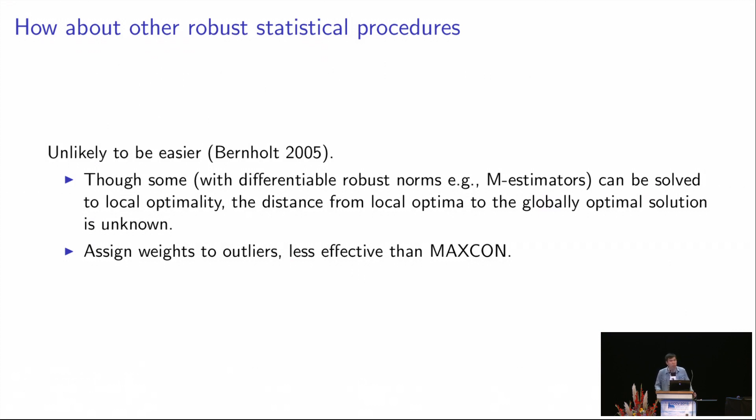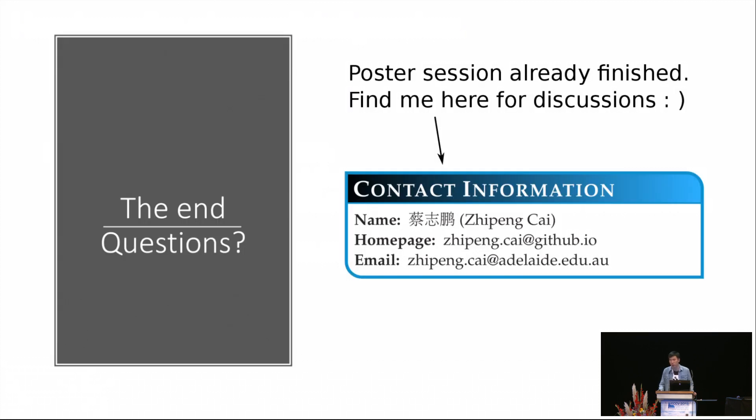So last thing, there are also other robust statistical procedures for robust fitting, but they are not likely to be much easier than MAXCON. Although some of them can be solved through local optimality, the distance from local optima to the global optimal solution is unknown. And some of them assign weights to outliers, which is less effective than MAXCON. So that's the message I want to send through this talk. Thank you.